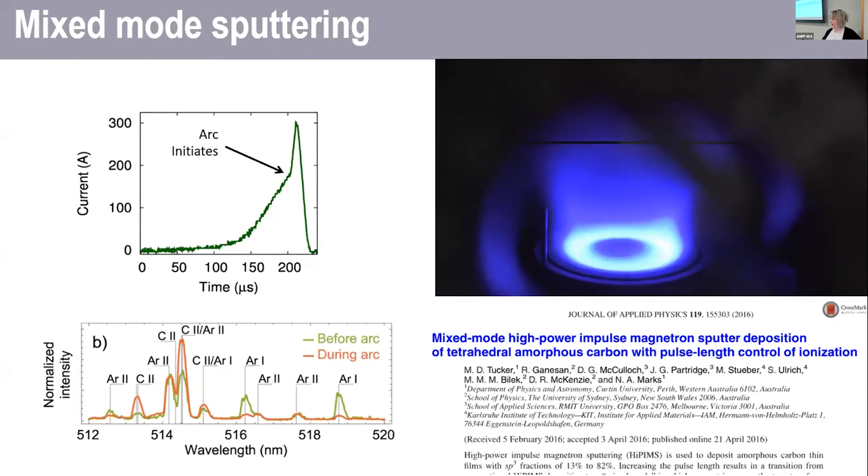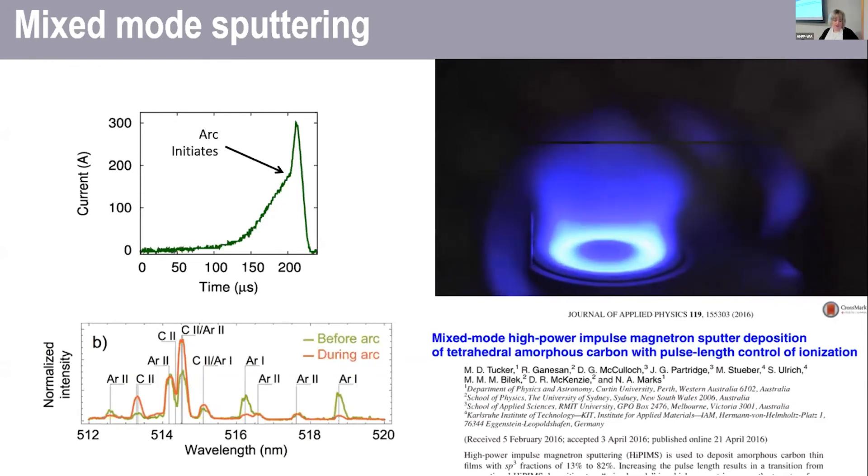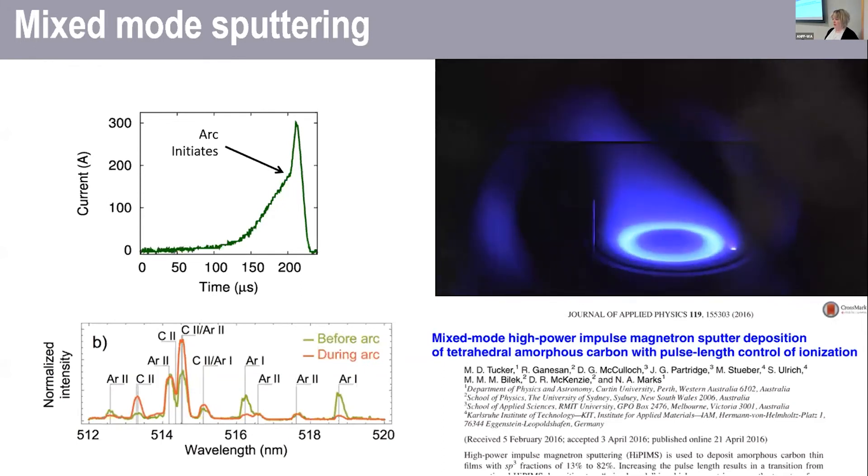You see the little graph shows where the arc initiates. We control the arc using a short pulse, so we only let it arc for a short period of time, and using that we were able to increase the ionization fraction.